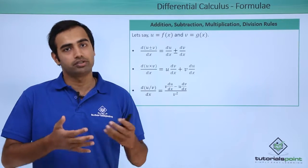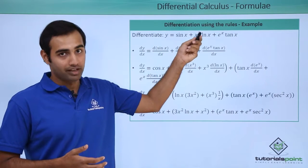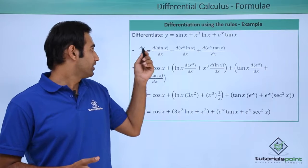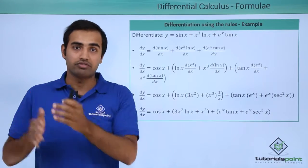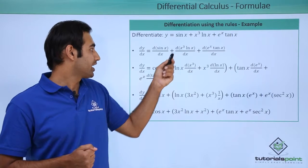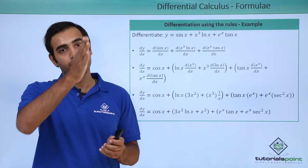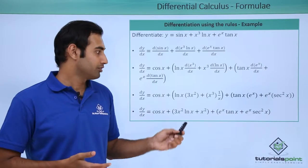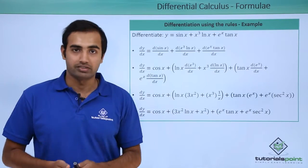Let's look at an example using these formulae. Given y = sin(x) + x³·ln(x) + e^x·tan(x), differentiate with respect to x. Since the derivative operator distributes, we can differentiate each term separately. Applying the product rule to x³·ln(x) gives ln(x)·d(x³)/dx + x³·d(ln x)/dx, using the formula u·(dv/dx) + v·(du/dx). The same product rule applies to e^x·tan(x). Putting in all values gives the final result. Students are encouraged to carry out the calculations themselves and cross-verify their answers.